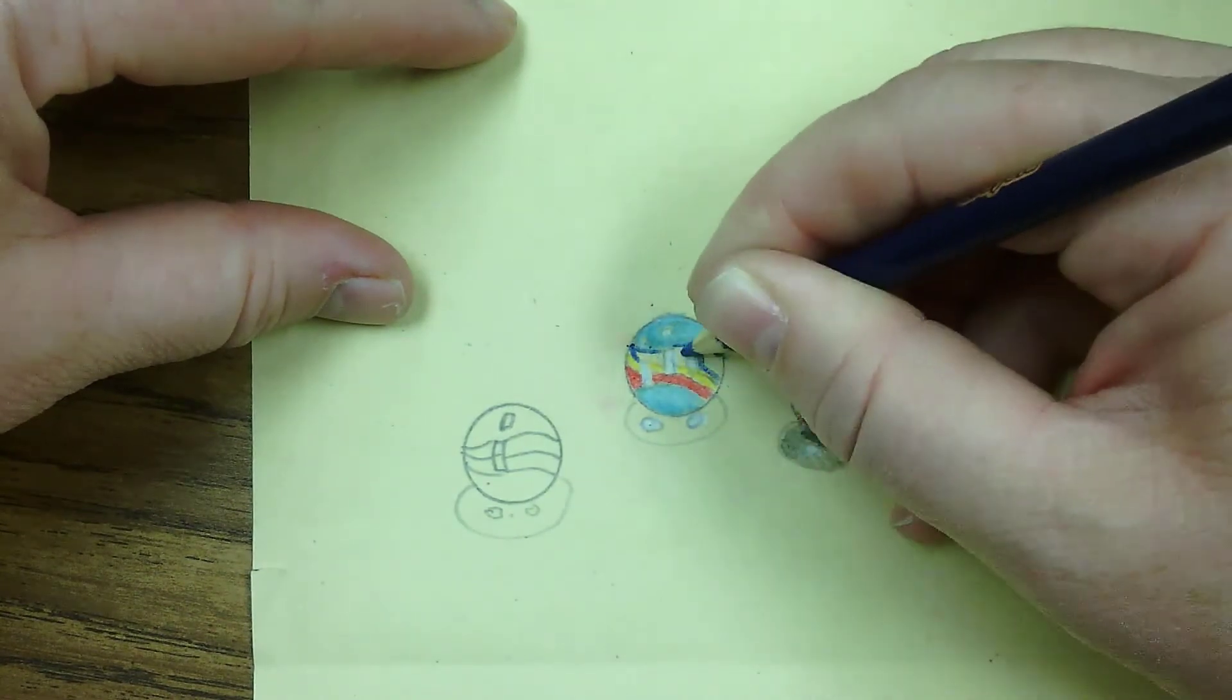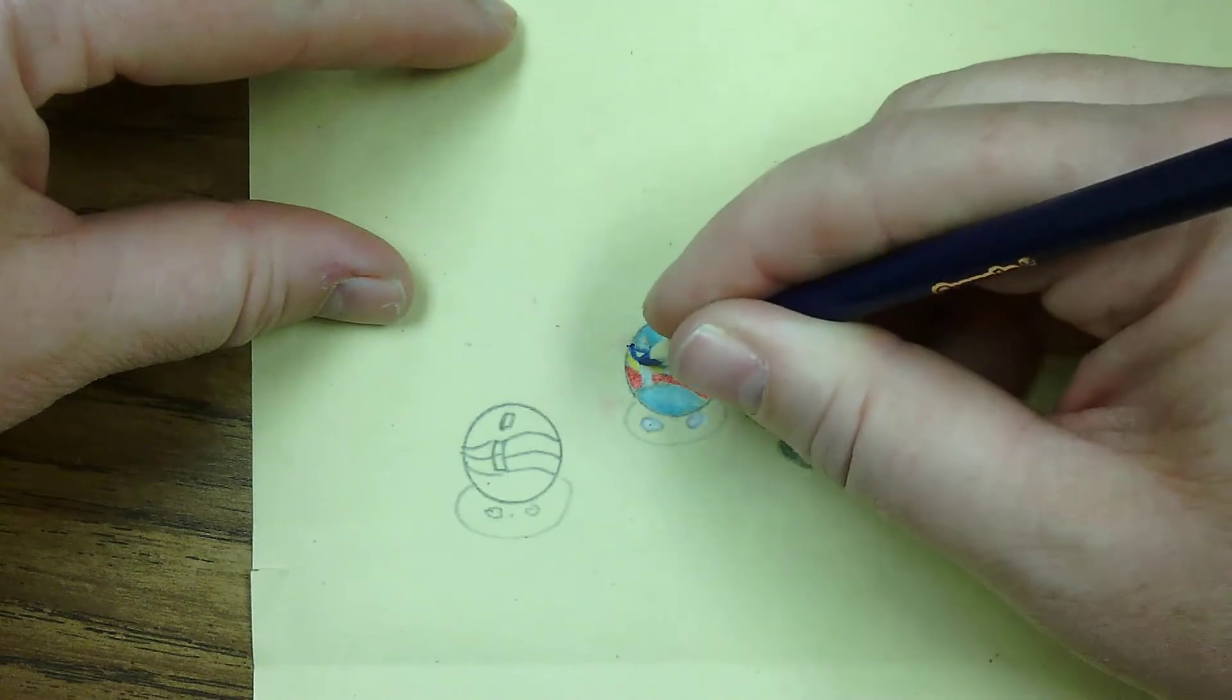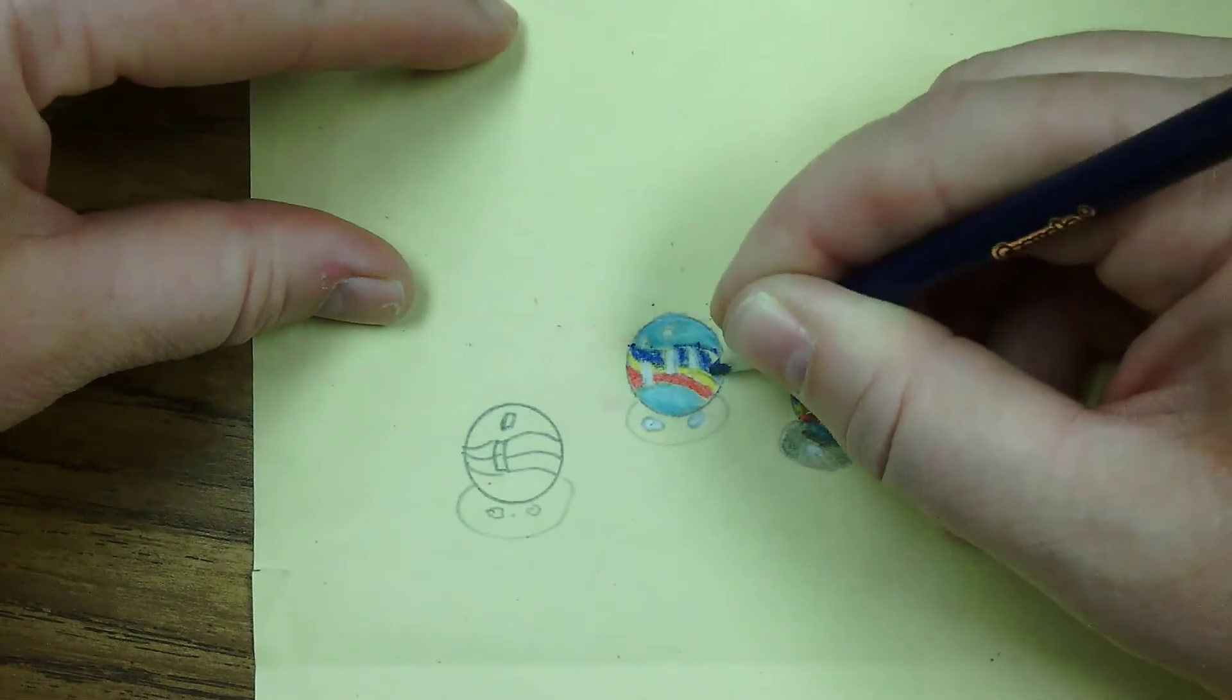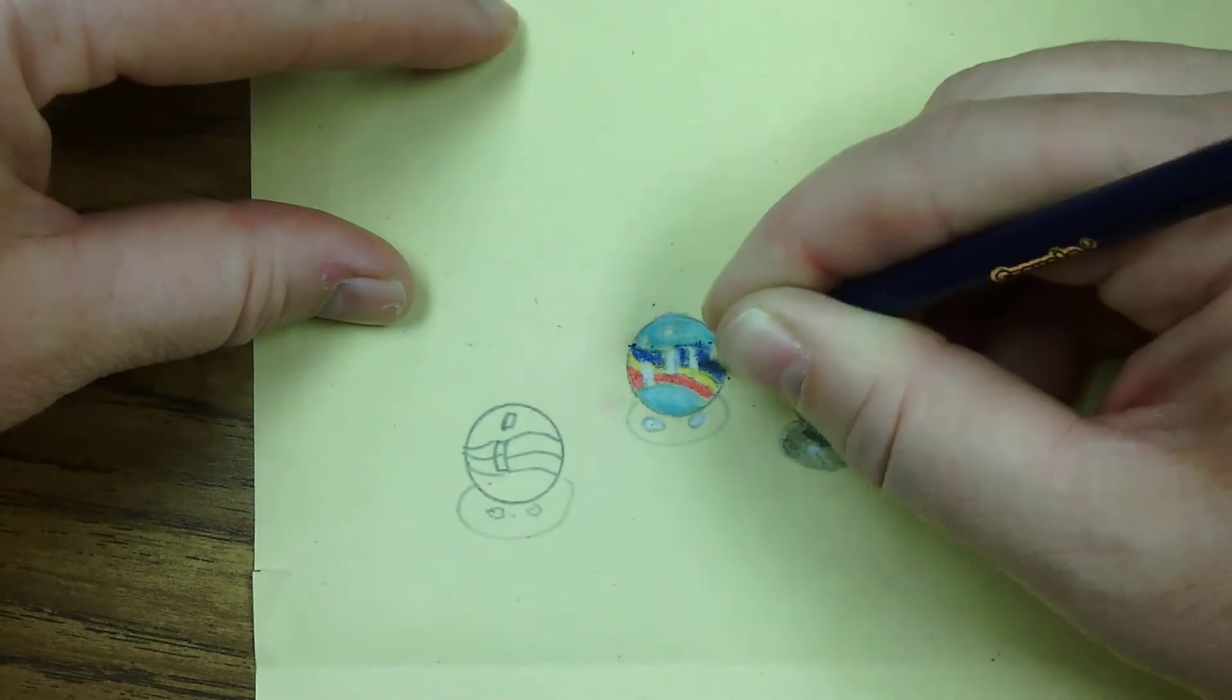Next is blue. Honestly, you could probably use any colors you want for the stripes. I'm just doing red, yellow, and blue because that's kind of iconic for a marble.